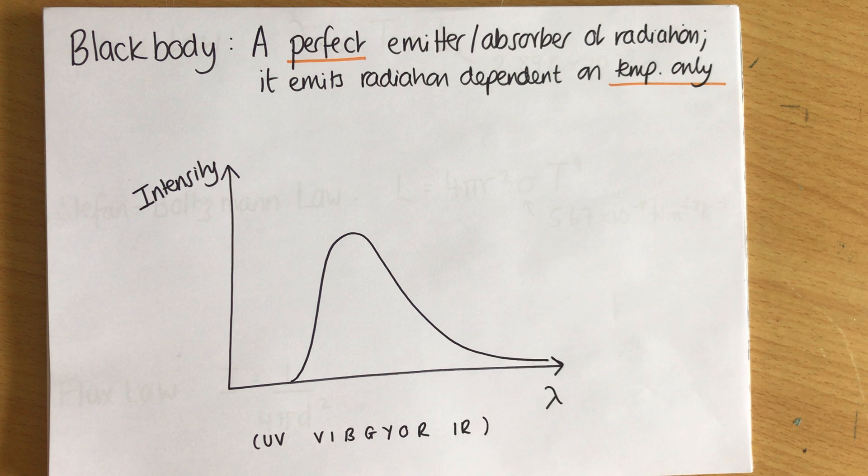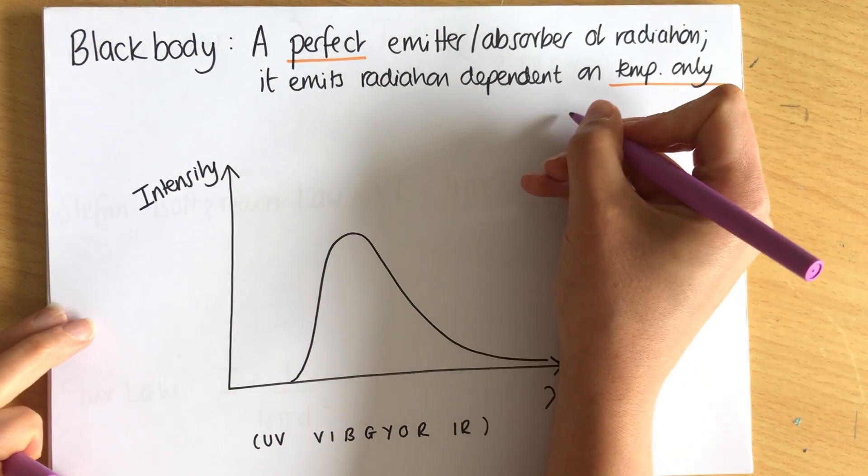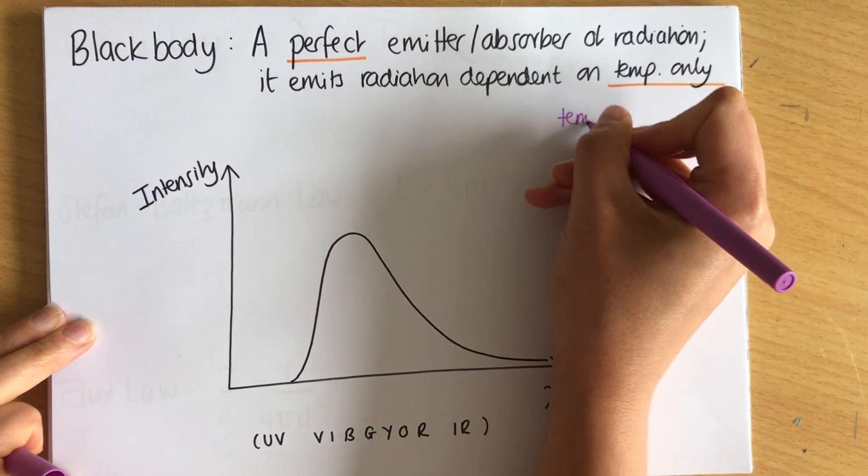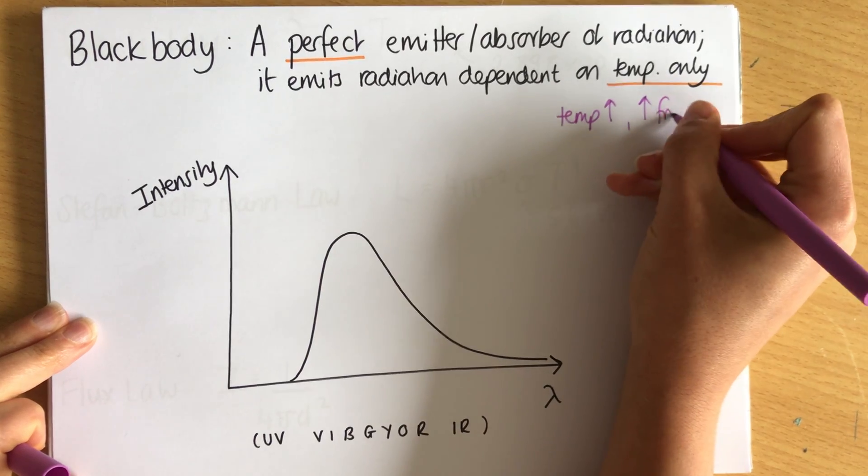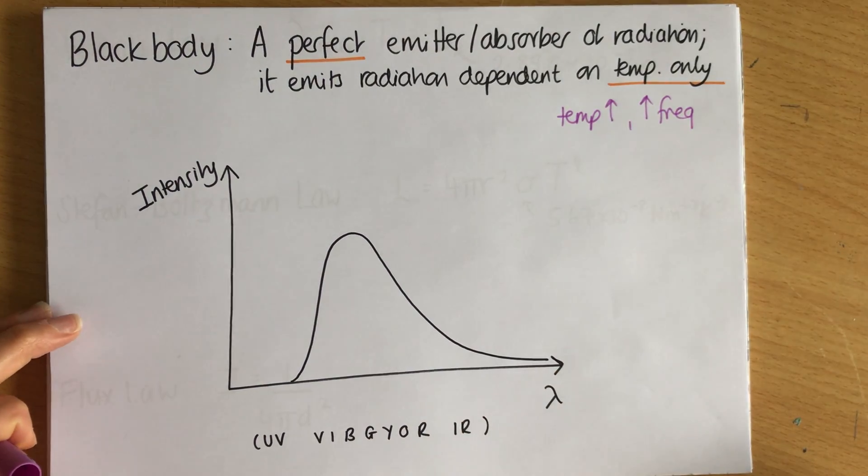and it will glow red, then it will glow orange, then it will glow yellow and then it will eventually glow white. And if you could get it hotter it could go blue. So what's happening there is that as we increase the temperature we're increasing the frequency of the radiation that is emitted.